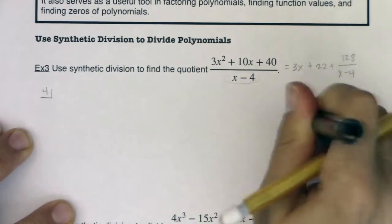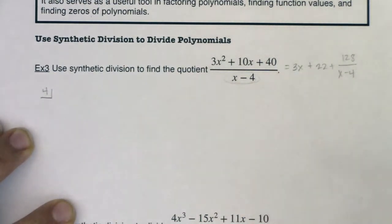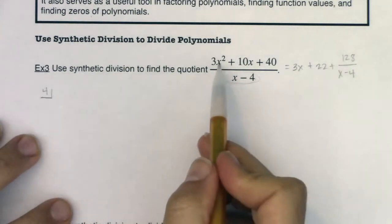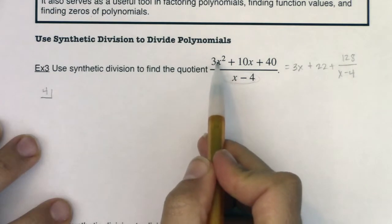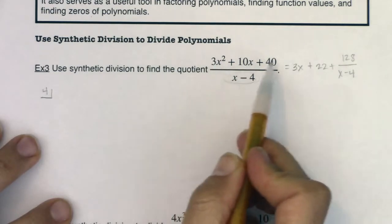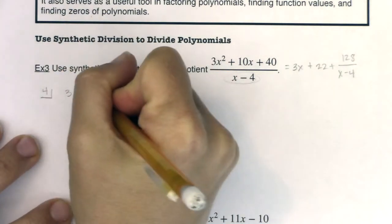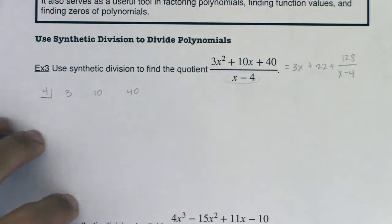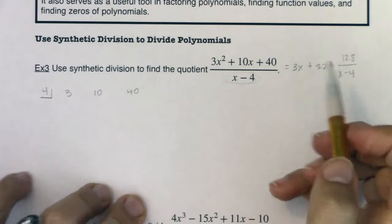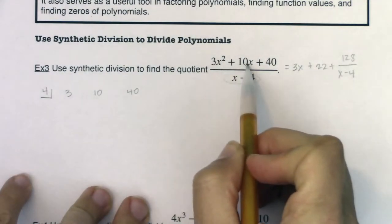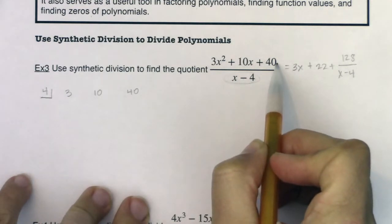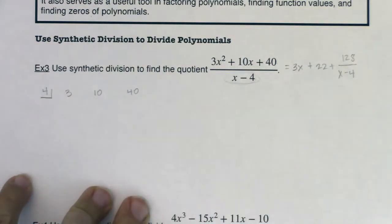All right, the next thing you have to line up in order to get synthetic division done is you need to put here to the right of your house, the coefficients of your numerator. So in this case, it's 3, 10 and 40. So I'm going to write 3, 10 and 40. Okay, now, I want you to just take note right now that I had descending powers of x, right x squared, x to the one, this is technically x to the zero. And I didn't skip over any powers.